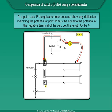At a point, say P, the galvanometer does not show any deflection, indicating the potential at point P must be equal to the potential at the negative terminal of the cell. Let the length AP be L1.